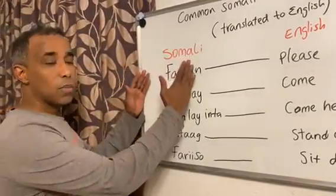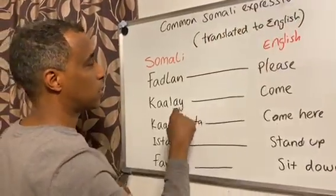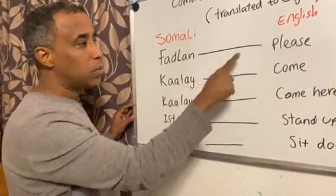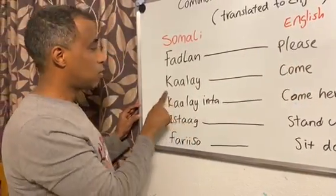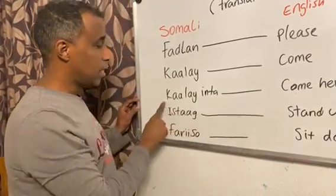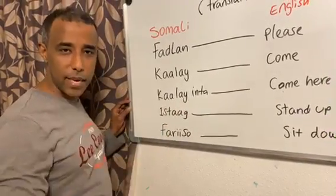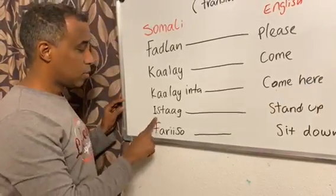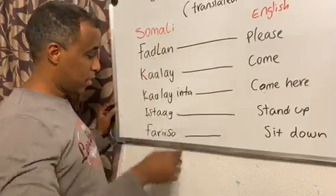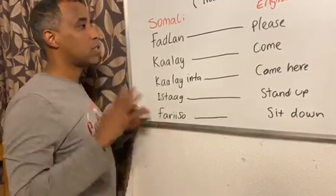Here we go. This is the Somali side and this is the English translated — common Somali expressions translated to English. In Somali we say 'fadlar', which in English means 'please'. 'Karlay' means 'come'. 'Karlay inter' means 'come here'. 'Tag' means 'stand up', and 'sit down' means 'sit down' in English.